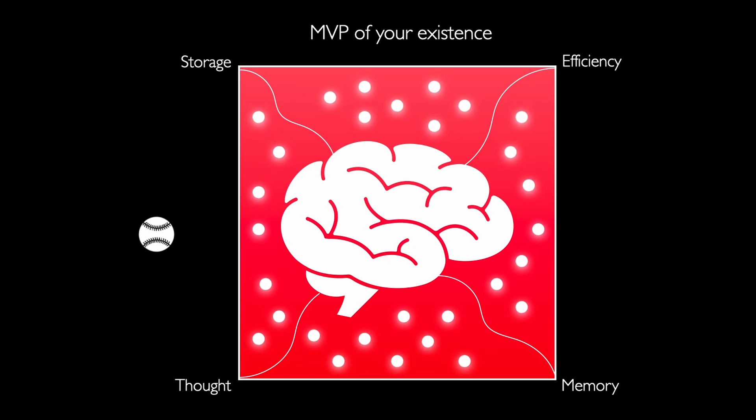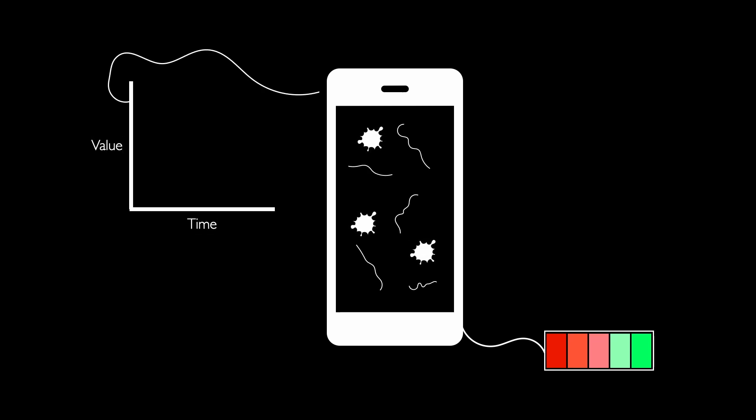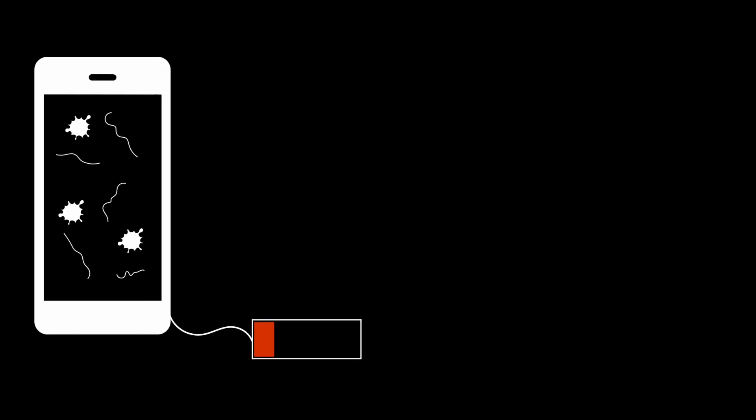But our brains, remarkable as they are, aren't immortal. They are extremely delicate and are vulnerable to aging, diseases, and the wear and tear of everyday life. It's a bit like your favorite smartphone. Over time, it might slow down, apps could crash, and the battery life might not be what it used to be. Now imagine that complexity on an entirely different level. That's your brain for you.